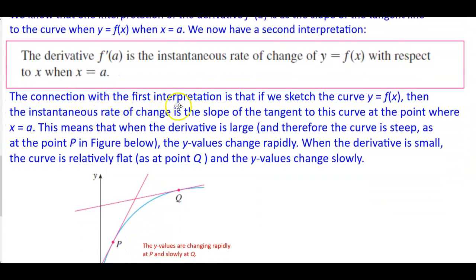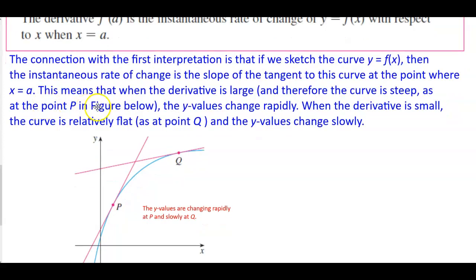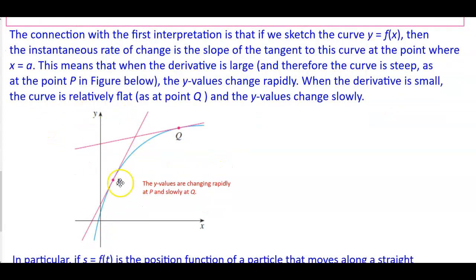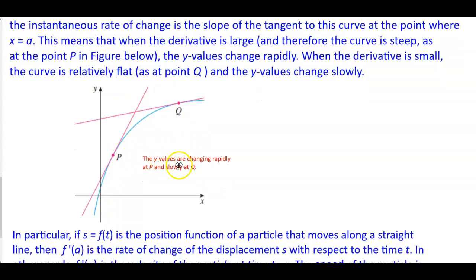The connection with the first interpretation is that if we sketch the curve y equals f of x, then the instantaneous rate of change is the slope of the tangent to this curve at the point where x equals a. This means that when the derivative is large and the curve is steep, as at the point P, the y values change rapidly. When the derivative is small, the curve is relatively flat, as at the point Q, and therefore the y values change slowly.